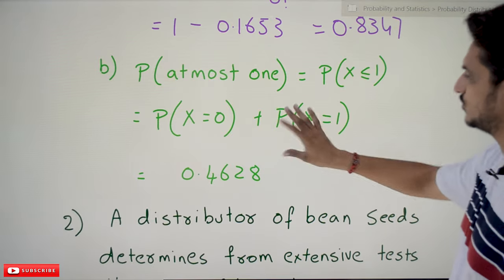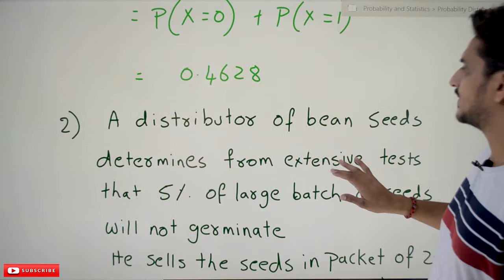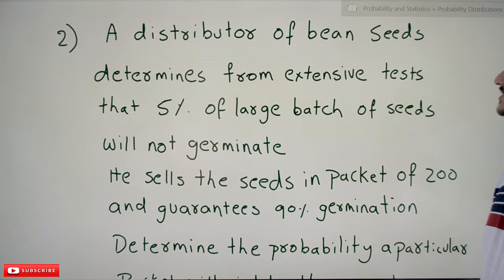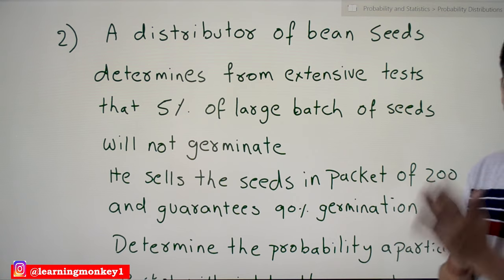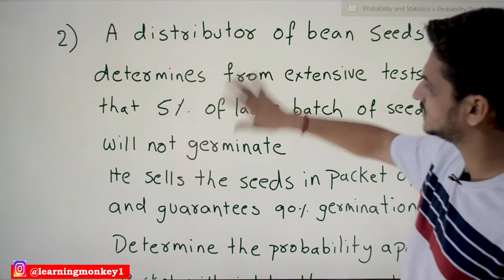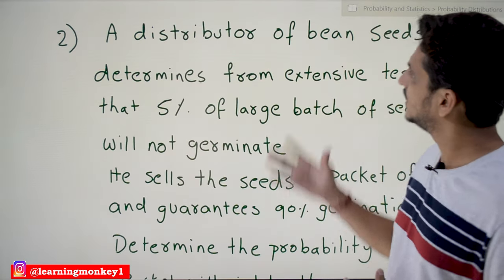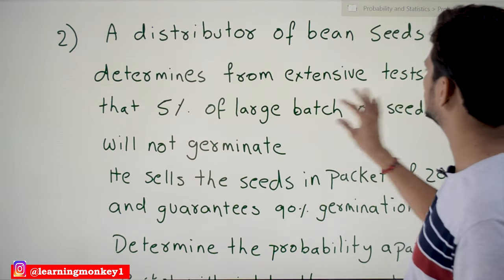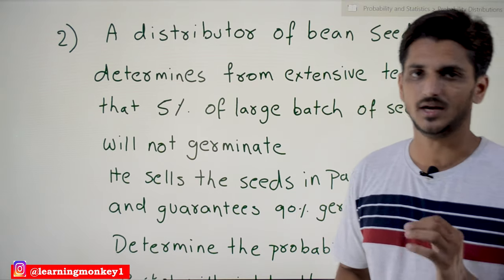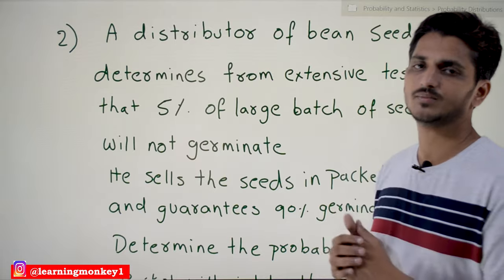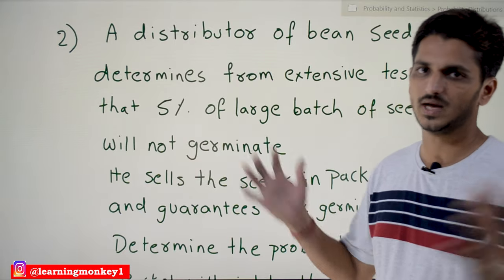Coming to the next one: A distributor of bean seeds determines from extensive tests that 5 percent of a large batch of seeds will not germinate. From their test, it was found that 5% of the large batch of seeds will not germinate, means they are going to fail. 5% are going to fail from the large batch of seeds.